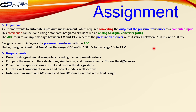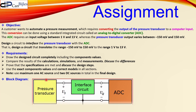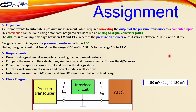Note that we are using maximum one AC source and we can use two DC voltage sources in total. Before we dive into the calculations, let's look at the required block diagram for this assignment. We have this pressure transducer which gives us some voltage between its two nodes Vs — that is minus 150 millivolts to 150 millivolts. In between there must be an interface circuit, which then feeds into the input of the ADC. The voltage at the ADC requires between 1 volt and 13 volts.